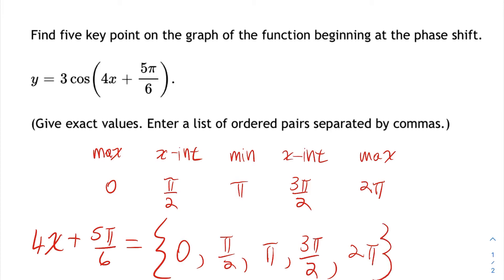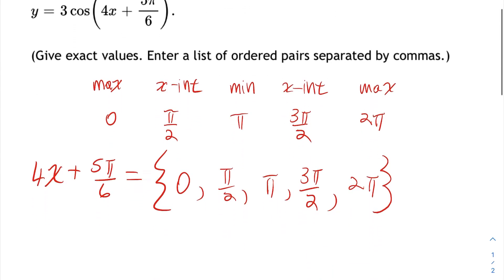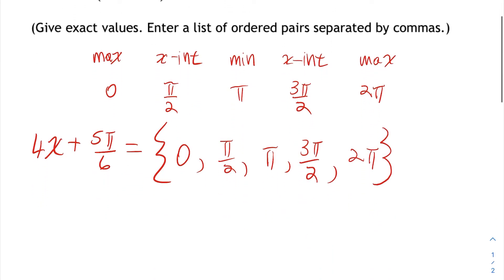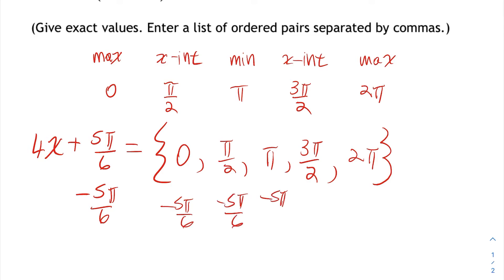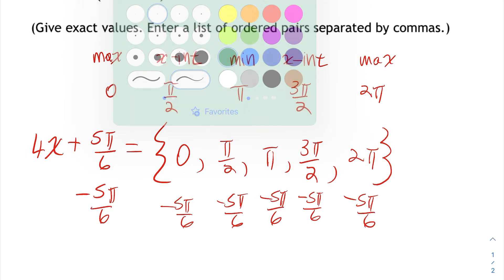So we're going to solve a bunch of equations simultaneously. To get x by itself, one thing I would do is subtract 5 pi over 6 from both sides — subtract 5 pi over 6 from all sides of all these equations. In order to do that, you'd need common denominators.